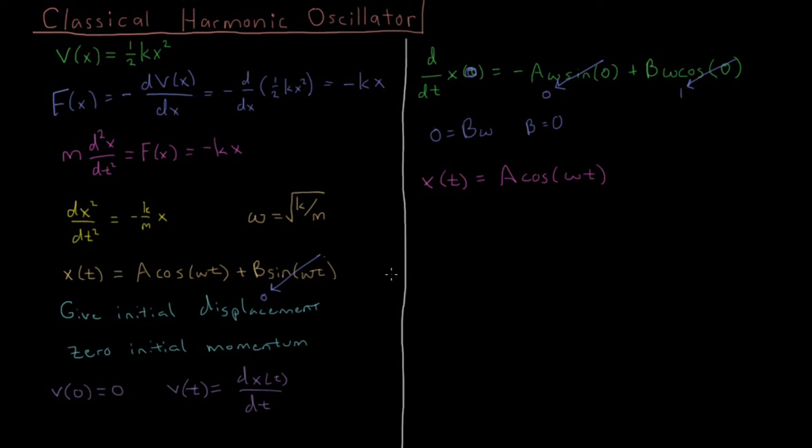If we graph this, let's say we have plus A and minus A, and we're graphing x of t. Initially, we have some displacement A, then we go down and up, and it just goes back and forth like this indefinitely.